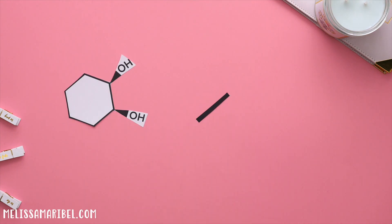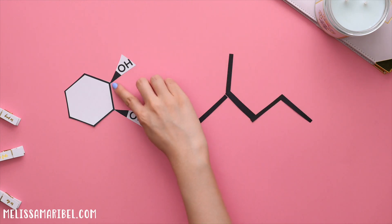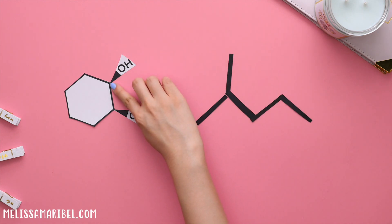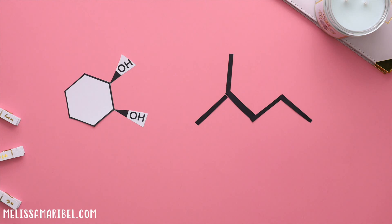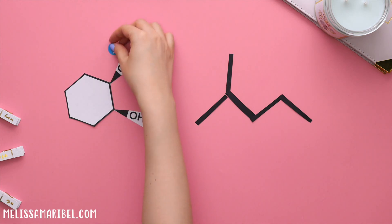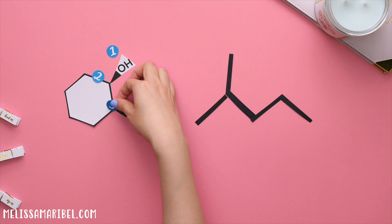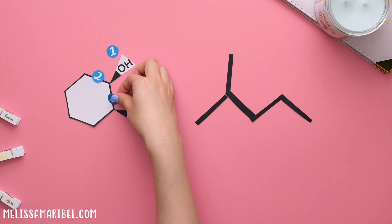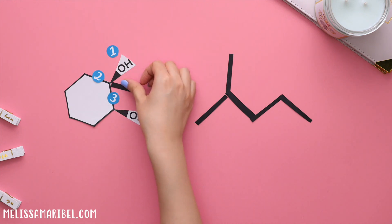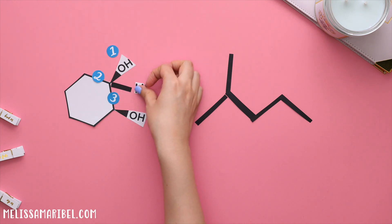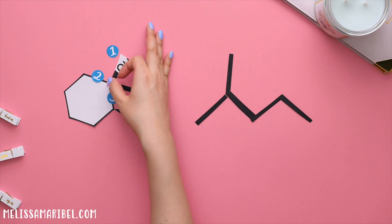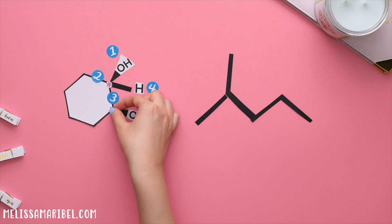Let's identify the chiral centers in these two examples. Looking at this carbon, we will see if there are four different groups surrounding the central carbon. We have OH, this carbon chain, a totally different carbon chain with an OH group, and a hydrogen. So both of these carbons are our chiral centers.